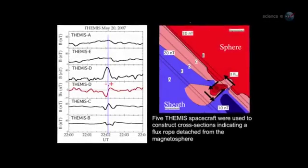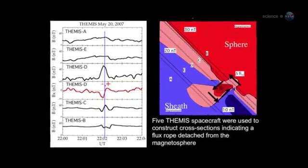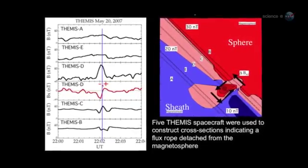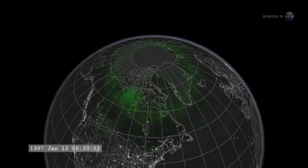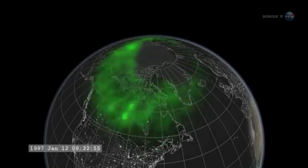Most portals are small and short-lived. Others are yawning, vast, and sustained. Energetic particles can flow through the openings, heating Earth's upper atmosphere, sparking geomagnetic storms, and igniting bright polar auroras.